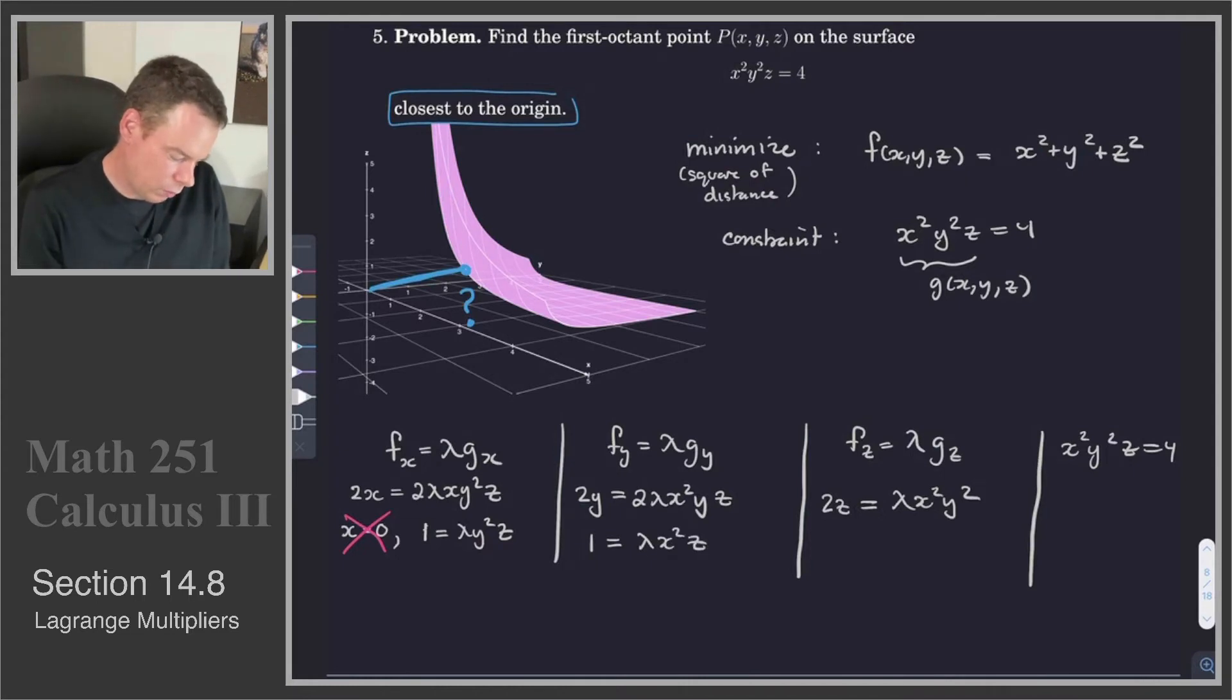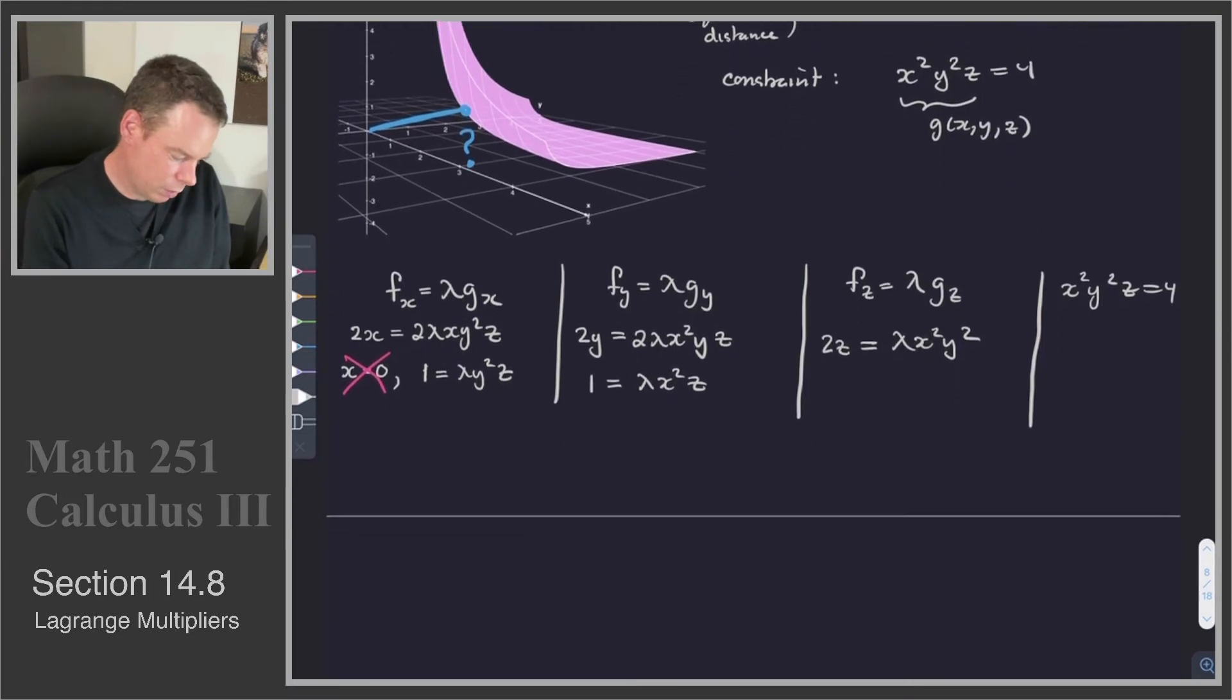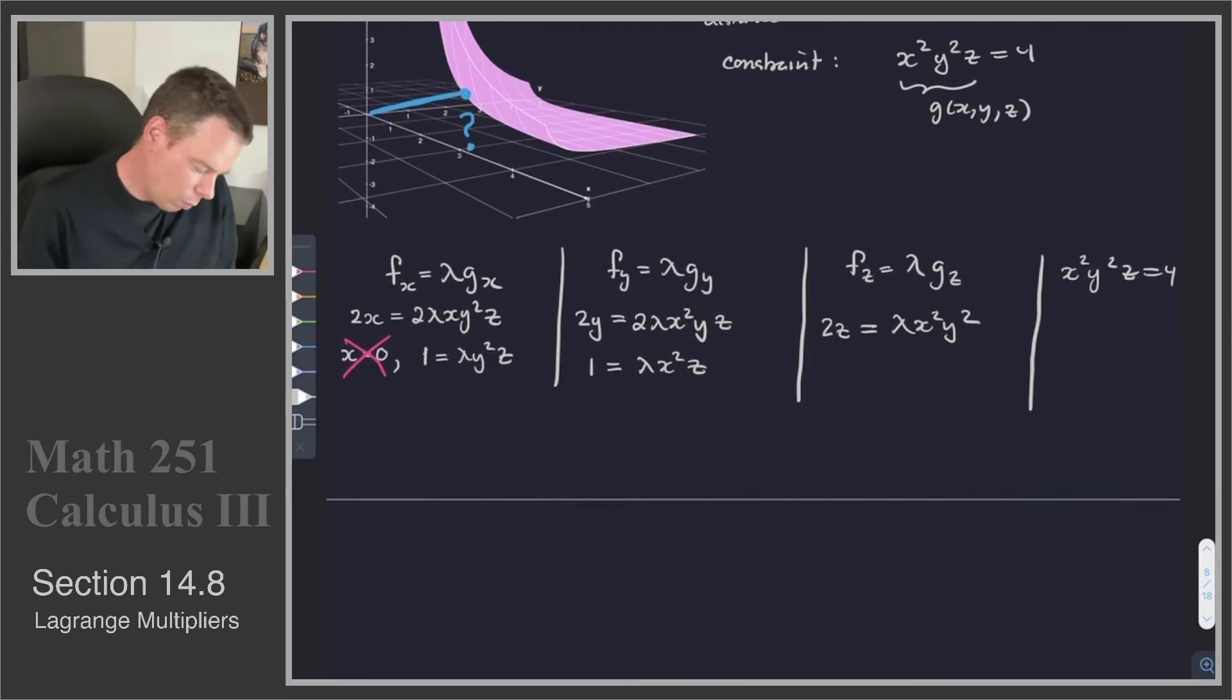So those first two equations simplify down a little bit more nicely. Now what can I do with this? Well, what I could do is I could take this first equation and this second equation and I could divide one by the other. So let's say we're going to take the first equation and divide it by the second equation. So I'm going to take the left hand side of the first, divide it by the left hand side of the second. That's 1 divided by 1, which is 1. I'm going to take the right hand side of the first, divided by the right hand side of the second. That gives me y squared over x squared.